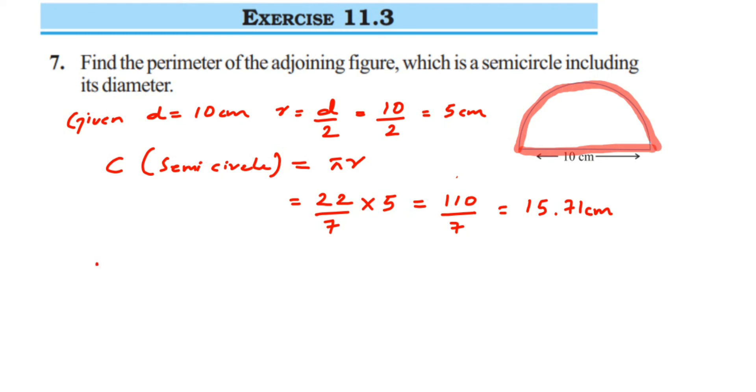So the perimeter is equal to - we have to find the circumference of the semicircle, which is 15.71 centimeters, plus the diameter, which is 10 centimeters. This diameter here is 10 centimeters. So this is equal to 25.71 centimeters.